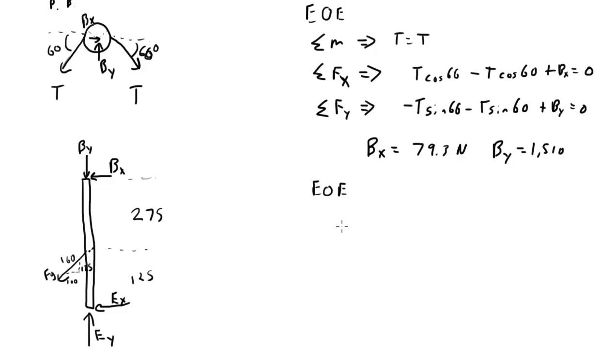So now I can write, again, equations of equilibrium. And so first let's do the sum of forces in the X direction. Minus BX minus EX minus FG 100 over 160 equals zero. Sum of forces in the Y direction. We have minus BY plus EY minus FG 125 over 160 equals zero.